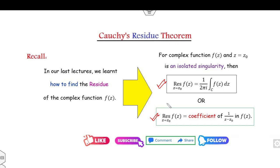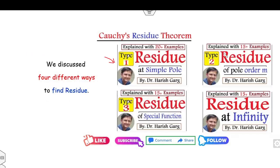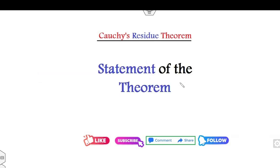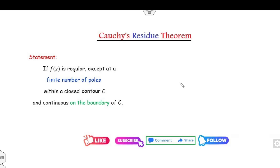Always remember, whenever you need to apply the Cauchy residue theorem, first watch those four lectures carefully. You can tell me in the comments how beneficial you found this lecture — it's very useful. There are 15 plus examples being explained. If today's lecture seems easy to you, you must watch all those lectures so that you can understand the Cauchy residue theorem in a very simple manner. So let's start with the statement and proof of the Cauchy residue theorem — it's a very important theorem in complex analysis. I hope you can like and comment on this video as well.